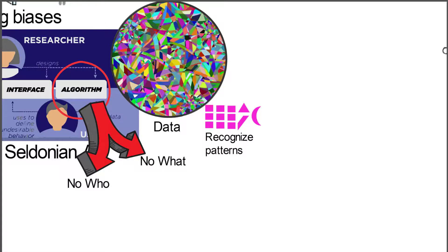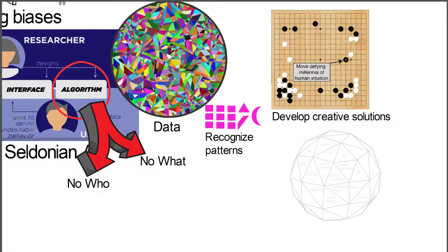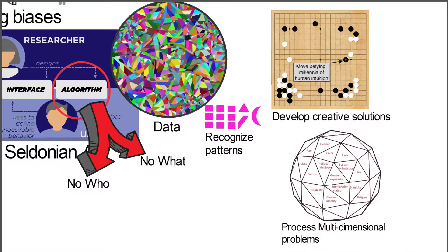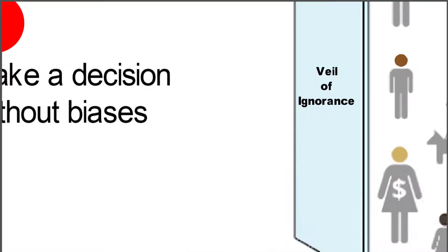Since AI is an algorithm, it doesn't really have a 'who' — it doesn't have a vested interest in the process itself. It's going to look across all of the data and try to find patterns, which is the same way we work normally as a species, but it wants to recognize those patterns without biases. It can develop creative solutions — we've seen this in the game of Go, where it did something that defied human intuition. It can also process multidimensional problems, which is exactly what this is.